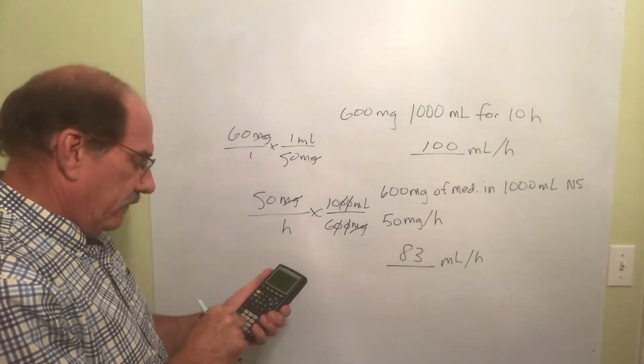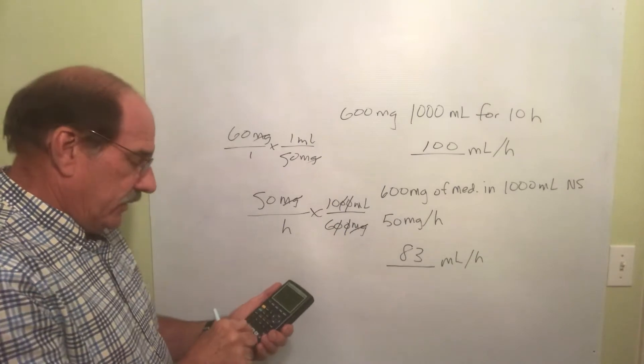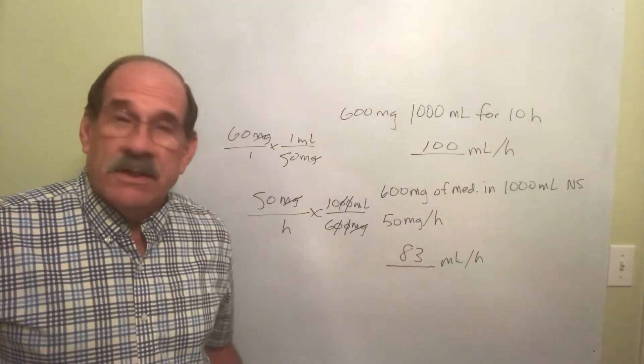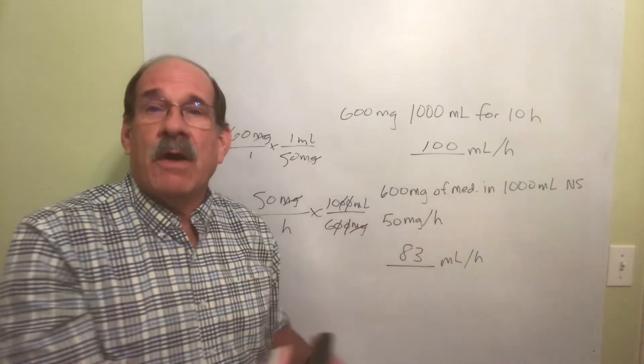50 times 10 then divided by 6. What a coincidence, the answer is 83, 83.3333, but round off to the nearest whole number on all IV problems.